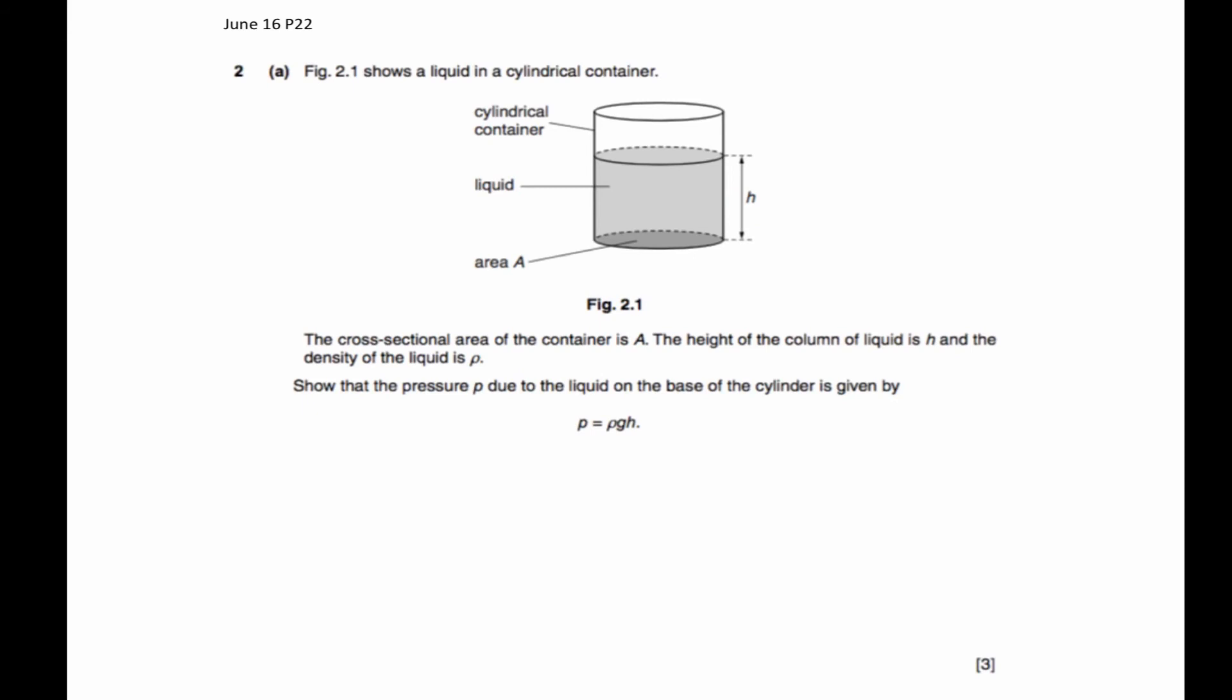Now in this question, they want you to prove that the liquid pressure is P equals ρgh. Whenever you see show that, you have to show every single important working. So what is your important working here? You must say the pressure at the base of the column of liquid, or you can say the pressure acting on area A is due to the weight of the liquid above it. I want you to write this down in sentence here before you begin.